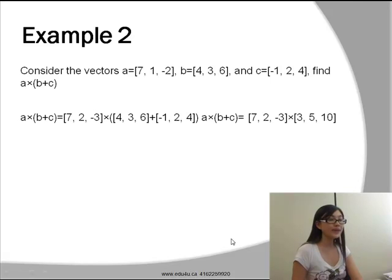The first thing we have to do is find out what B plus C is. So we have to add the vector 4, 3, 6 to -1, 2, and 4. And that's going to give us 3, 5, and 10.